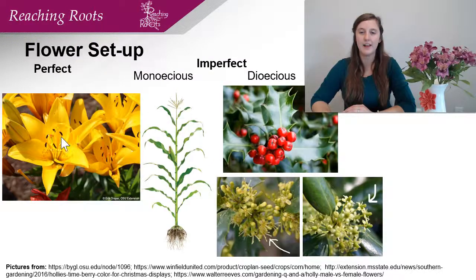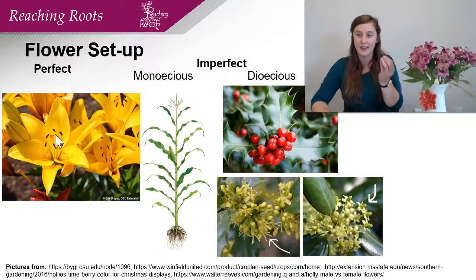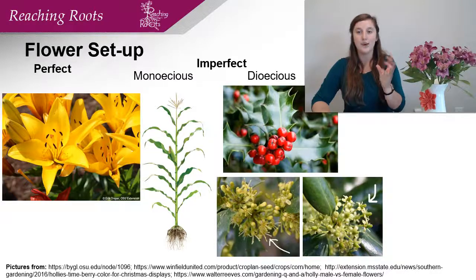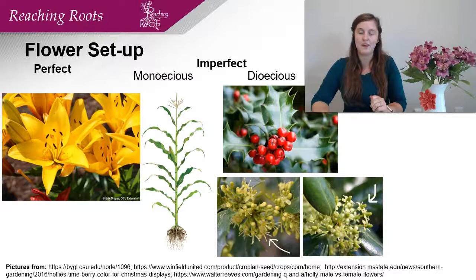Perfect flowers have male and female parts in the same exact flower — same location, male and female parts right next to each other. Whereas with imperfect plants there are two different types. We'll go over monoecious first.